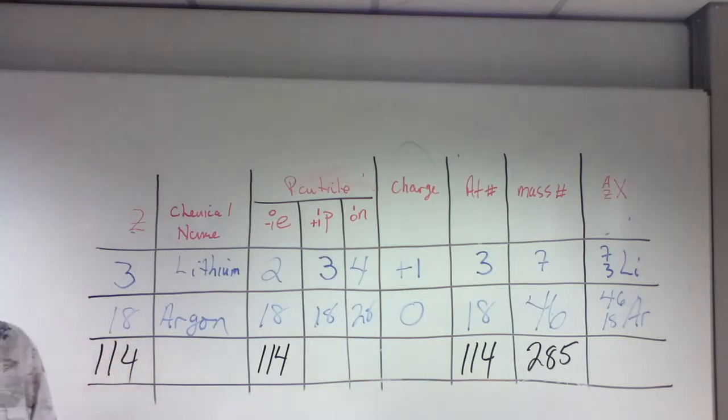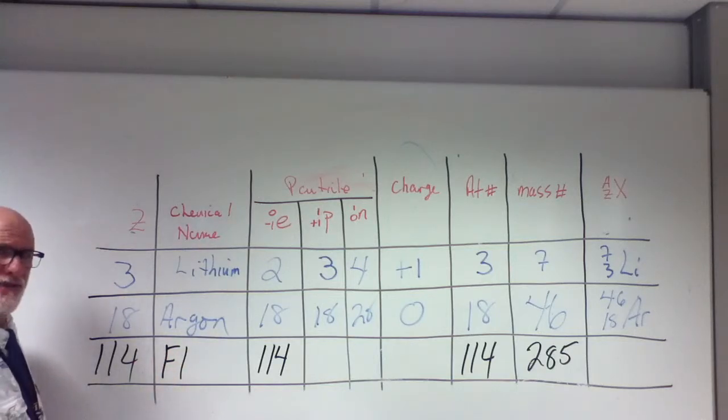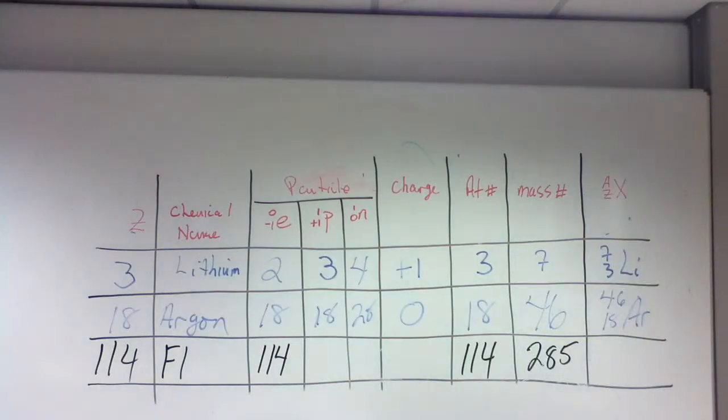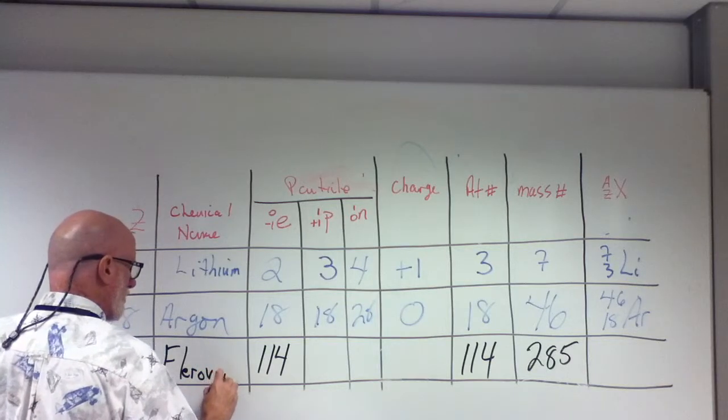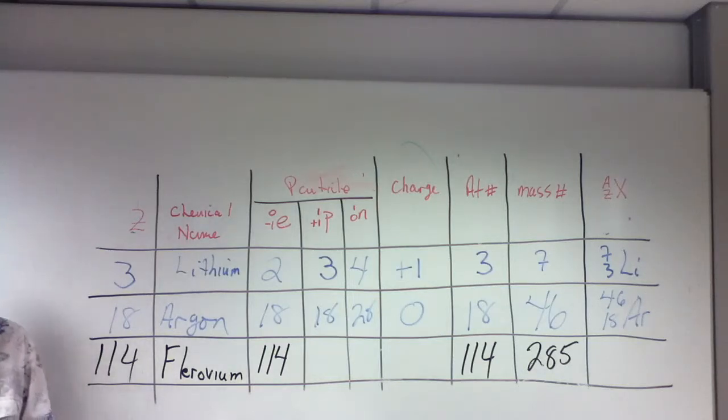What's the name of this? You have to have a pretty up-to-date periodic table. Florian? No. F-L... Purple? F-L-E-R-O-V-I-U? Well, spell it for me. F-L-E-R. O-V-I-U. M. F-L-E-R-O-V-I-U-M. That's like the newest elements, right? Flerovium. That's the new one. Yeah, that's one of the new ones.